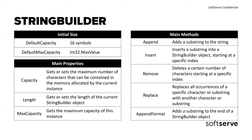StringBuilder is a mutable string class. Mutability means that once an instance of the class has been created, it can be modified by appending, removing, replacing, or inserting characters. A StringBuilder object maintains a buffer to accommodate expansion to the string. New data is appended to the buffer if room is available; otherwise, a new larger buffer is allocated. Data from the original buffer is copied to the new buffer, and the new data is then appended to it.